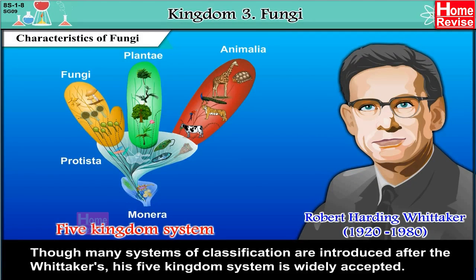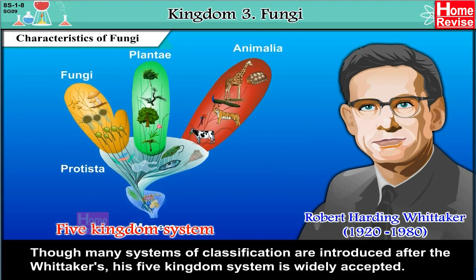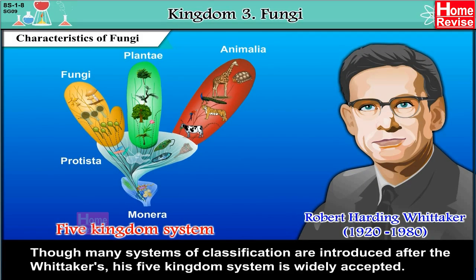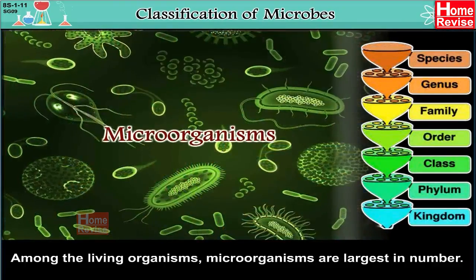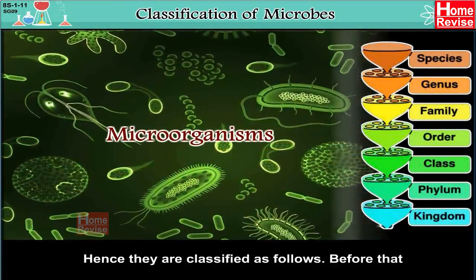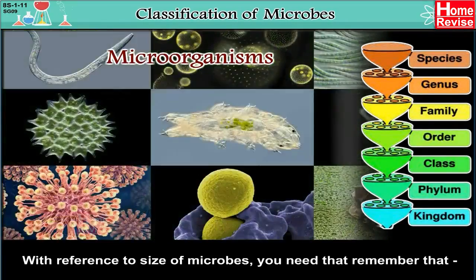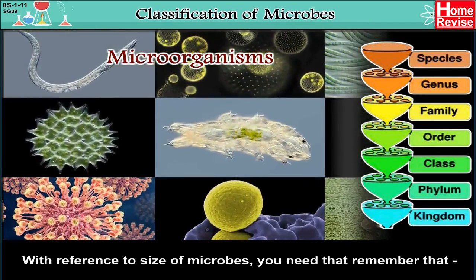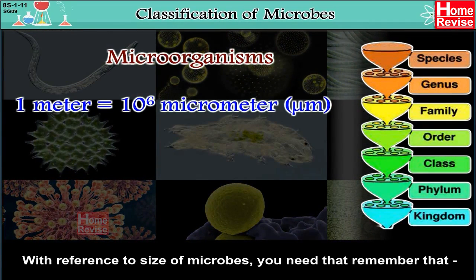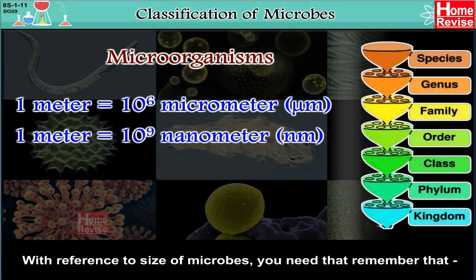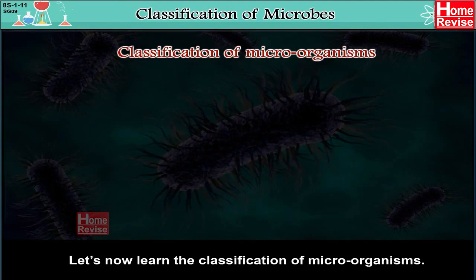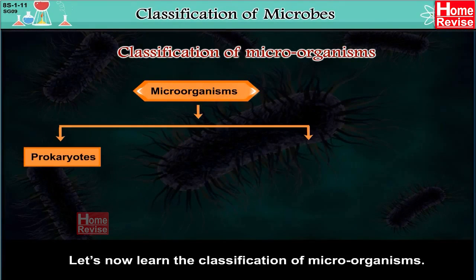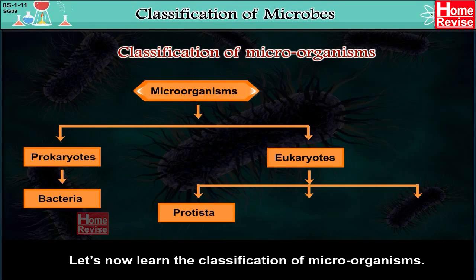Though many systems of classification have been introduced after Whitaker's, his Five Kingdoms system is widely accepted. Classification of Microbes: Among living organisms, microorganisms are the largest in number. Regarding size, 1 meter equals 10 to the power of 6 micrometers, and 1 meter equals 10 to the power of 9 nanometers. Microorganisms are classified into prokaryotes (bacteria) and eukaryotes (Protista, Fungi, Algae).